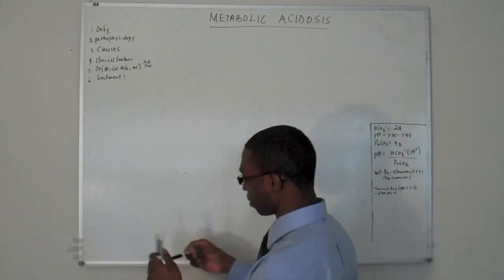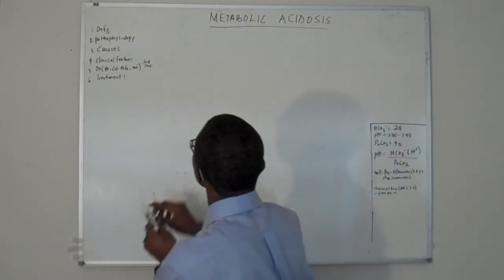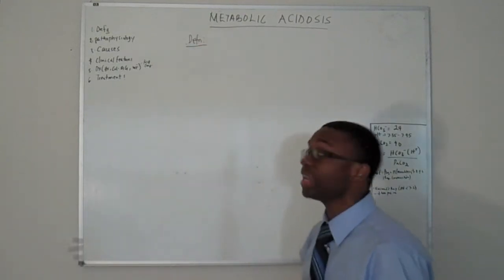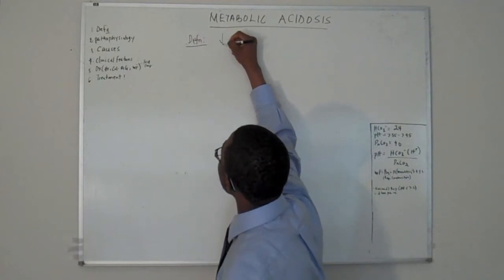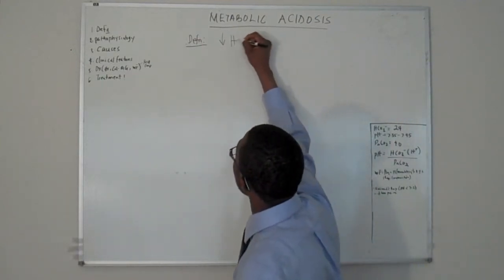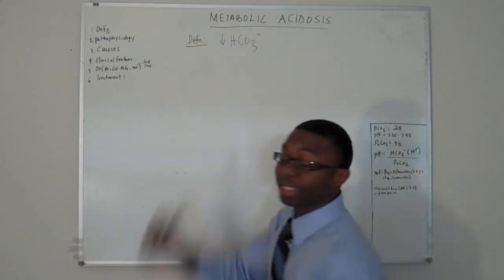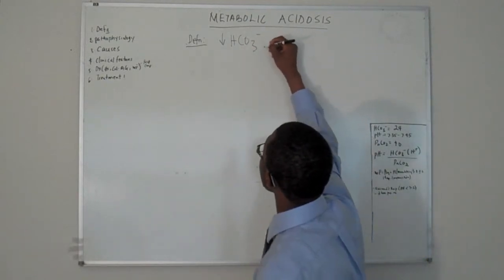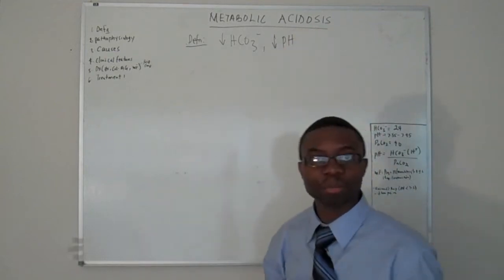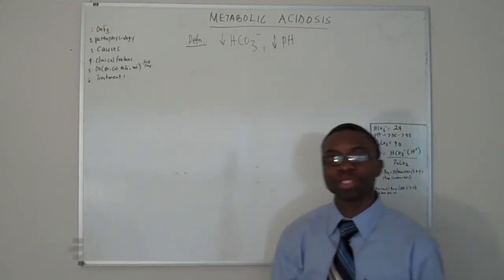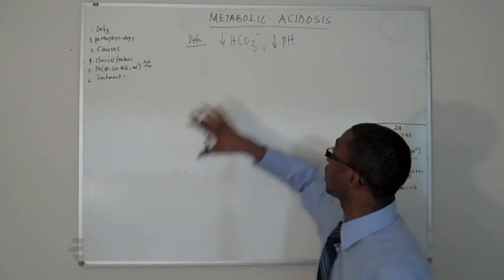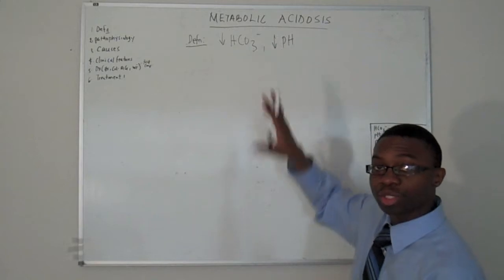So definition. What's the definition of metabolic acidosis? The definition basically is any change physiologically in your body that causes your bicarb to be decreased, causing a decrease in your pH in your blood. That's just a simple definition. Anything that makes your bicarbonate in your blood, which is supposed to be a buffer, and makes your blood pH to decrease.